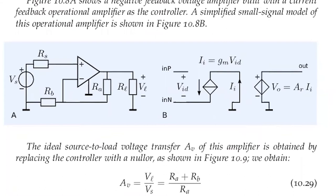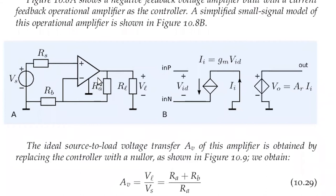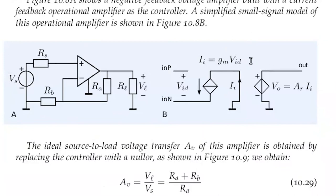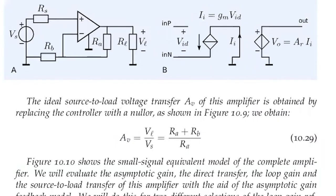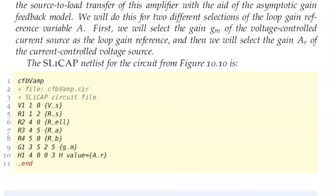We will apply a more complex operational amplifier as the controller — not just a normal voltage-controlled voltage source. I want to apply an operational amplifier model that has two controlled sources. That is just for explaining how the selection of the reference variable works. Here I have a current feedback operational amplifier. The output is referred to ground, with an asymmetrical input. The most important thing is we have two controlled sources. I can put this small signal diagram into this circuit and obtain the combined circuit.